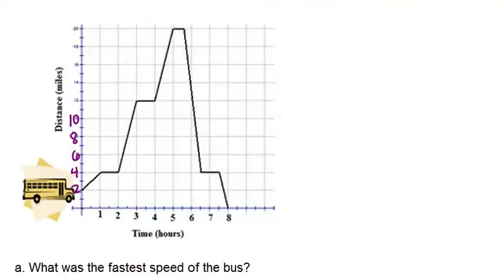Question A: What was the fastest speed of the trip? Okay, so anytime you have a distance-time graph, speed will be the slope of the line between any two points.